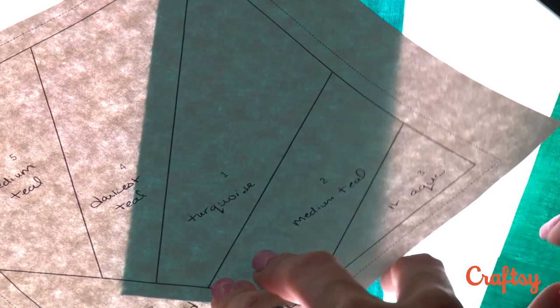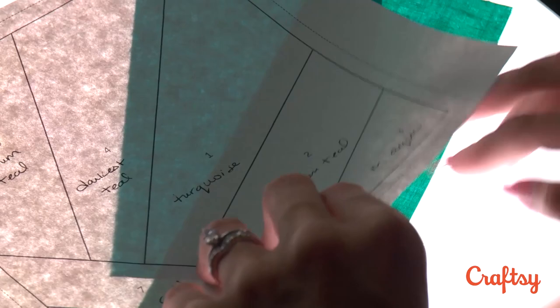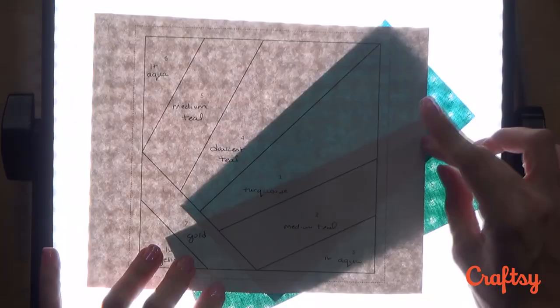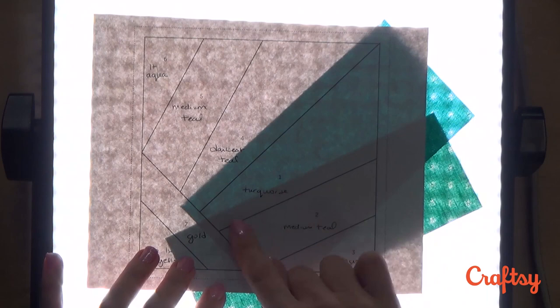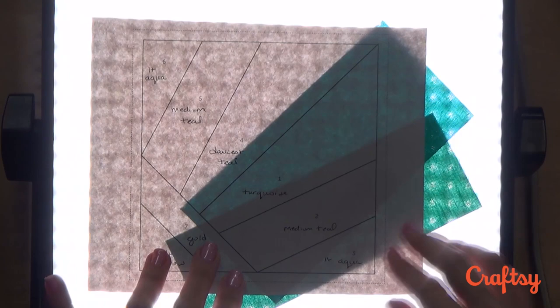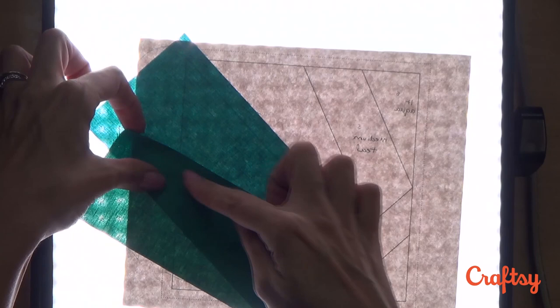Now our intuition kind of wants us to place that number two fabric exactly where we wanted to end up in the finished template, but if we do that we are going to wind up with a seam allowance that's the reverse of what we want. If we flip this over for example and pretend that we've sewn this particular seam allowance in place, this is what we get. This is not what we want.